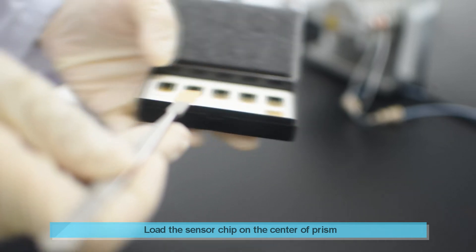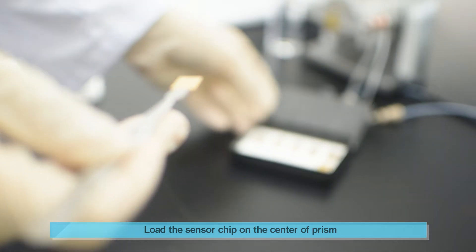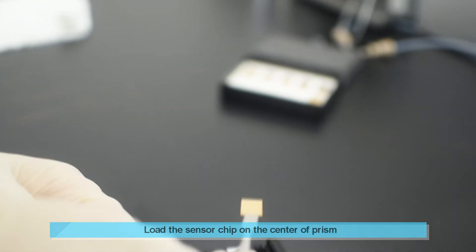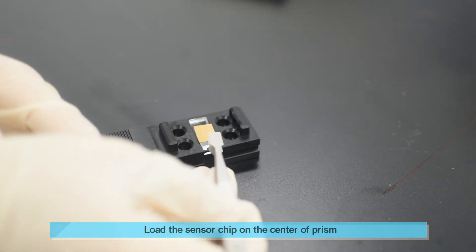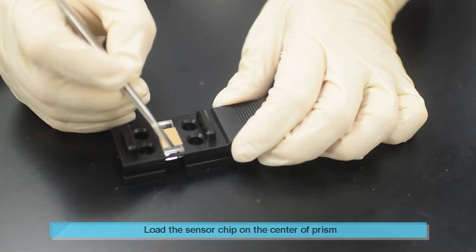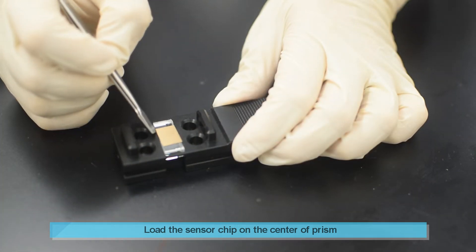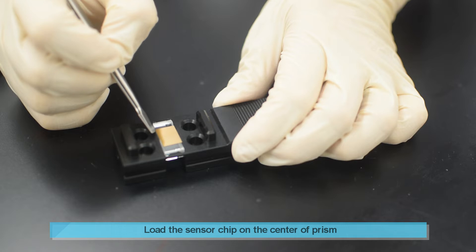Lift one end of the sensor chip with a tweezer. Carefully place the sensor chip at an angle so that it touches sequentially from one side. Make sure that the sensor chip is loaded on the center of the prism.